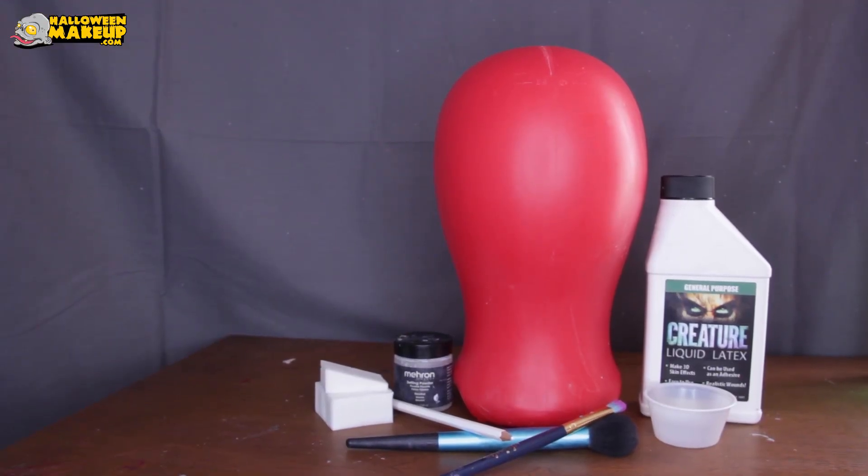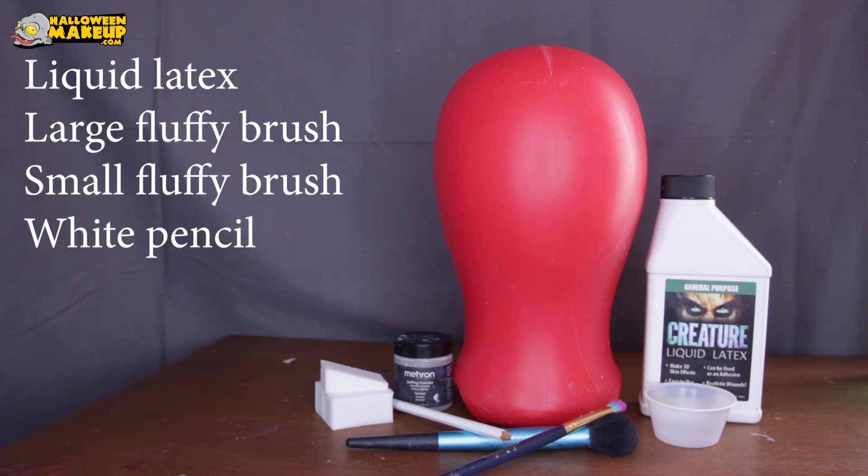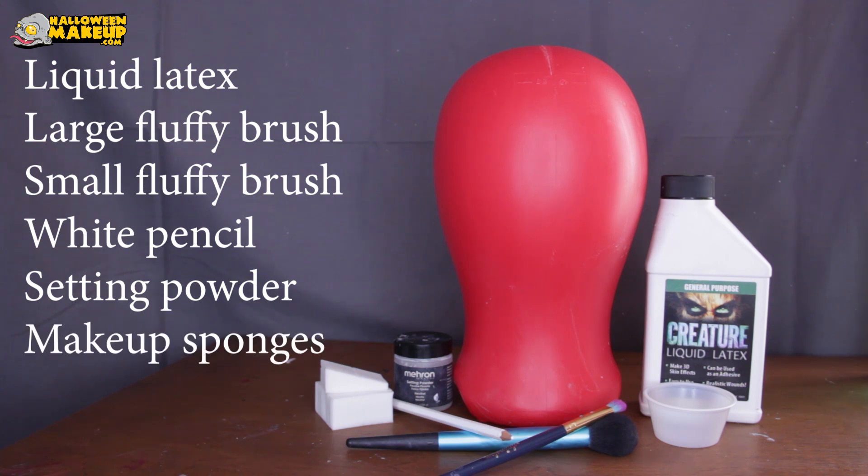Hello Internet! We both know why you're here. This is going to be how to make a bald cap. I use liquid latex, a big fluffy brush, a smaller fluffy brush, a white pencil, translucent setting powder, and makeup sponges, as well as a red bald cap head form. This is the Kryolan Redhead.